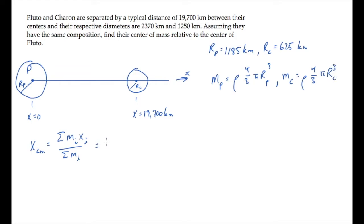When we write the expression for the center of mass, mass of Pluto, position of Pluto, plus mass of Charon times the position of Charon, divided by the sum of the masses, we can substitute the mass expressions from above. Notice when we do that, from the numerator and the denominator, the density and the factor of four-thirds pi will all cancel.